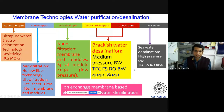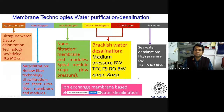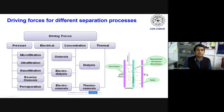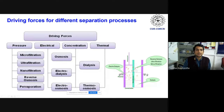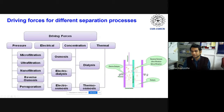Ion exchange membranes are charged or functional membranes. The different driving forces for separation processes are: pressure gradient for microfiltration, ultrafiltration, nanofiltration, reverse osmosis, and pervaporation; electrical potential for electrodialysis and electroosmosis; concentration gradient for dialysis and osmosis; and temperature gradient for thermoosmosis.